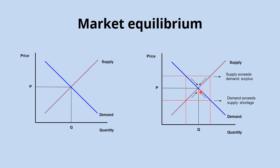This means that whenever we're away from equilibrium, market forces constantly push us back toward it. We refer to this as the point where the market clears — where supply equals demand — giving us our equilibrium market price and quantity.